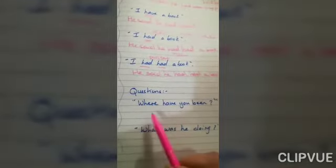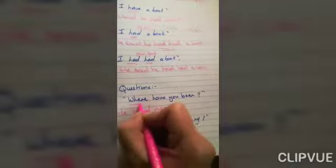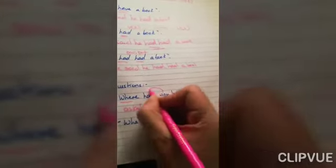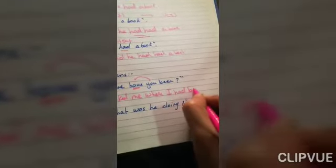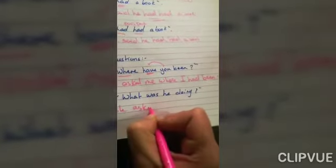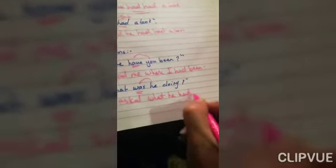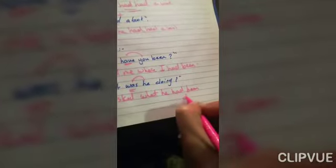Now moving to reporting questions. 'Where have you been? He asked me.' For WH-questions, you begin with the question word. You do the tense shift — the past of 'have' is 'had' — so it becomes 'where I had been.' For 'What was he doing? She asked' — you do the shifting — 'was' becomes 'had been' — so it becomes 'what he had been doing.'